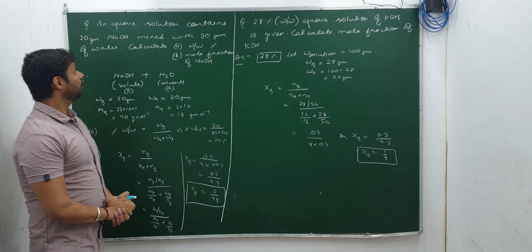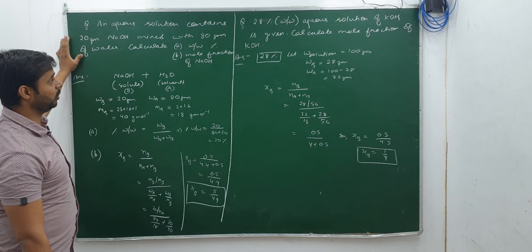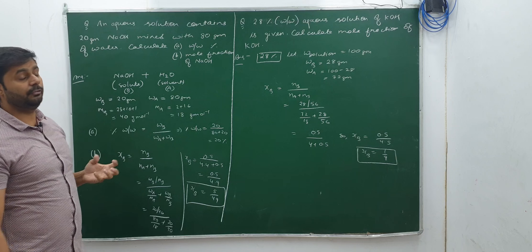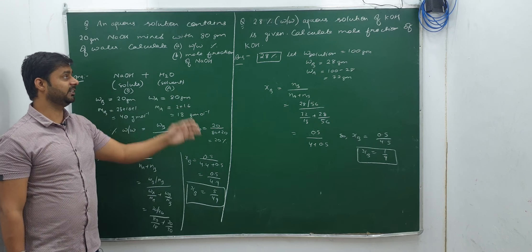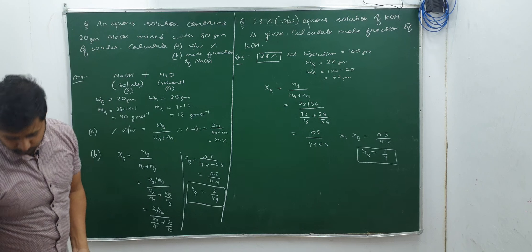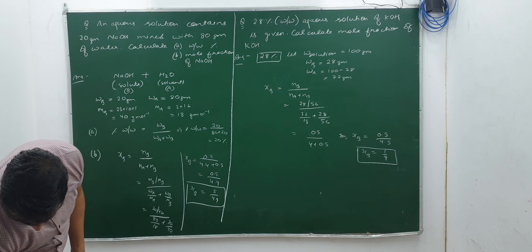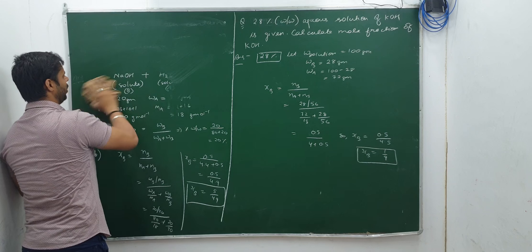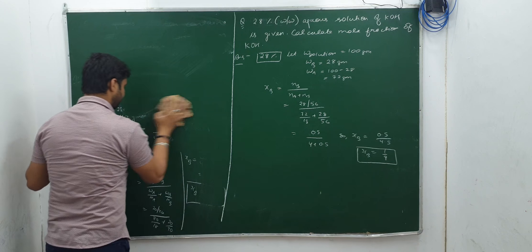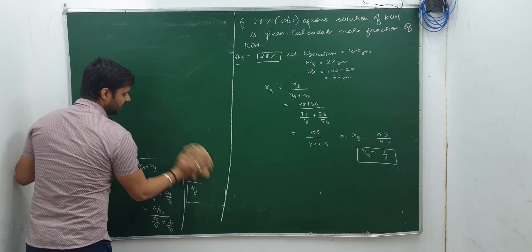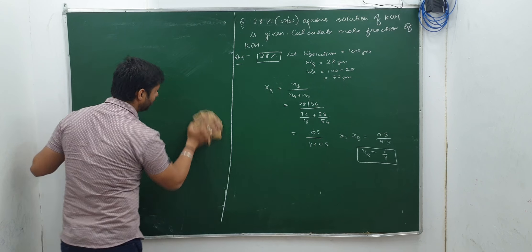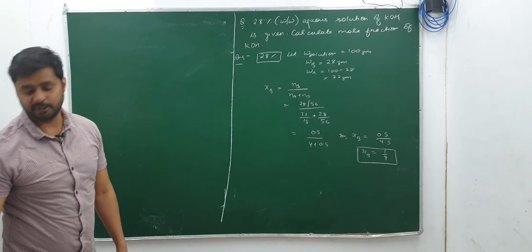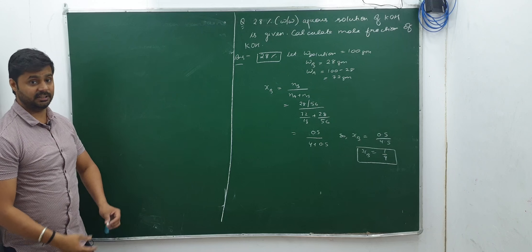So what we did: in the first question we were given masses and converted to percentage by mass and mole fraction. In the second question we were given mass percentage and calculated mole fraction. Let's solve one more question where I will apply a different concept — concept building is a better idea, but you must also know how to reduce effort and time.